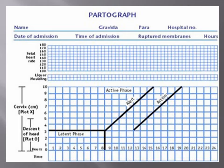Oxytocin works like antidiuretic hormone and can cause fluid retention, leading to water intoxication and heart failure. If 60 drops per minute is not achieving contractions, we double the dose of Syntocinon — four units in 500 cc — starting again at 15 drops per minute, then 30, then 60. The partogram also shows cervical dilatation and fetal heart tracing.